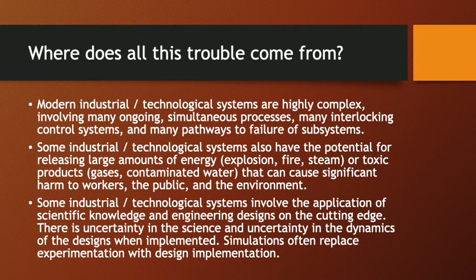Second, some industrial and technological systems also have the potential for releasing large amounts of energy through explosion, fire, or steam, or large amounts of toxic products — whether gases or contaminated water — that can cause significant harm to workers, the public, or the environment. The amount of damage which can be done by some contemporary technology systems is vastly greater than was the case 100 or 150 years ago.